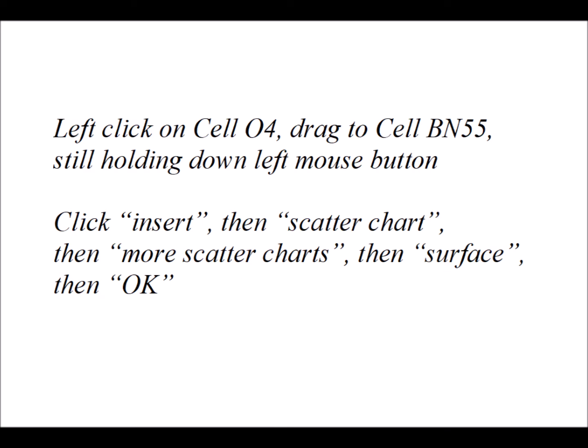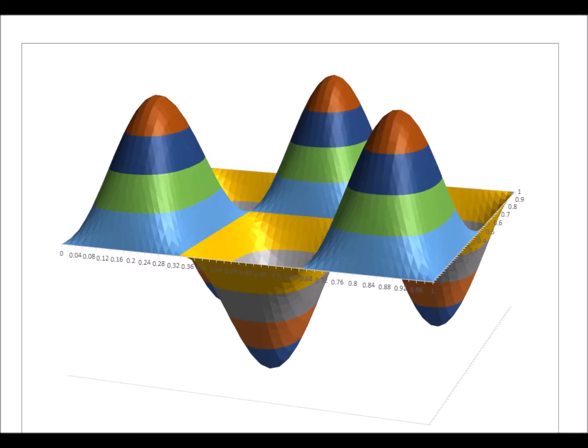Then to display our kind of three-dimensional graph, we want to left click on cell O4 and then drag to cell BN55 and keep the left mouse button still depressed. Then up at the top, we want to click on insert, then scatter chart. Then at the bottom, we'll say more scatter charts. We want to click on that and then click on the entry which says surface. Then at the bottom, you'll click on the box that says okay.